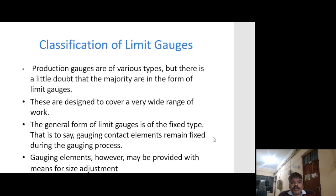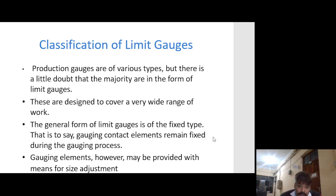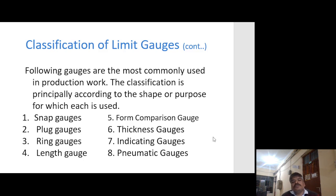Classification of limit gauges: production gauges are of various types, but the majority are in the form of limit gauges, designed to cover a very wide range of work. The general form of limit gauge is the fixed type — that is, the gauging contact element remains fixed during the gauging process, although the gauging element may be provided with means for size adjustment. Classification is principally according to shape or purpose for which it is used.